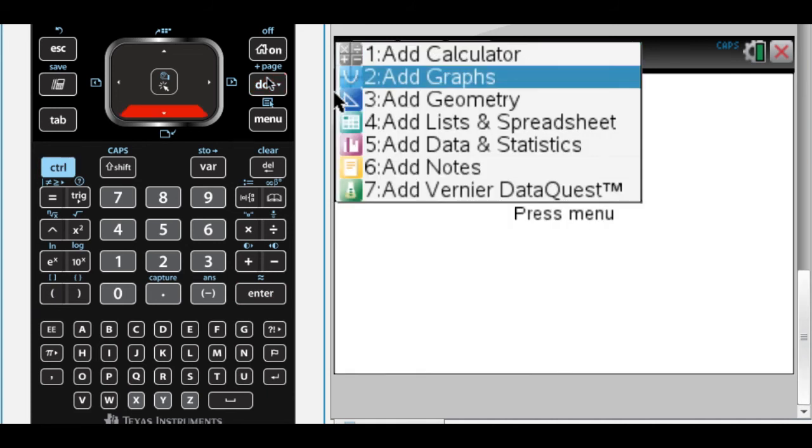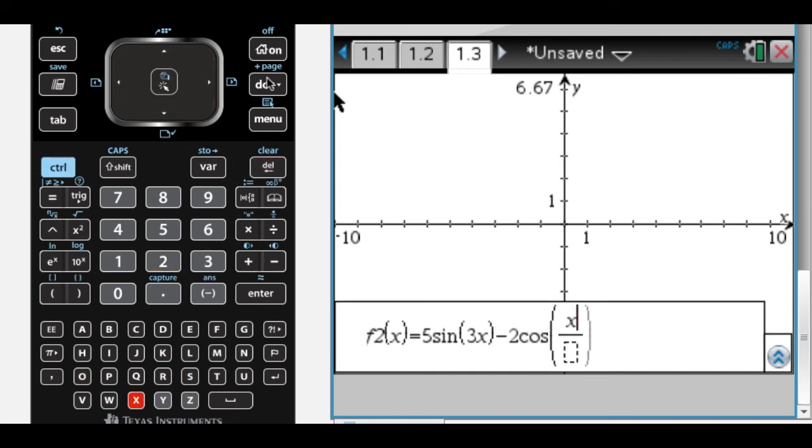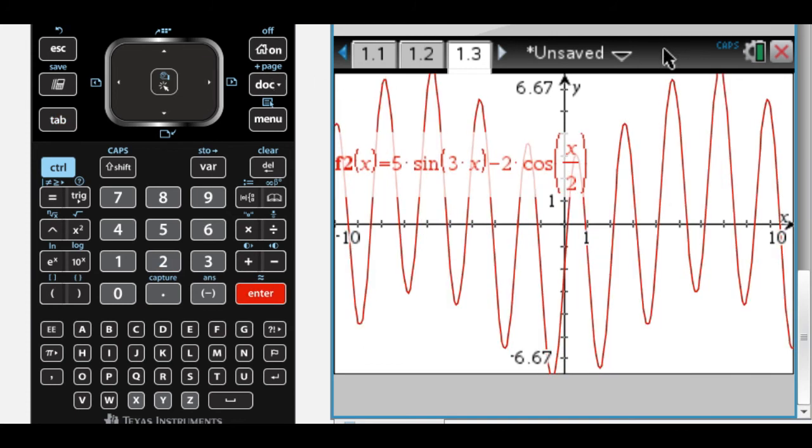And what I can do now is if I add another page, a graph page, and graph another function. Let's say 5 sine of 3x minus 2 cosine of x over 2. I get this function.